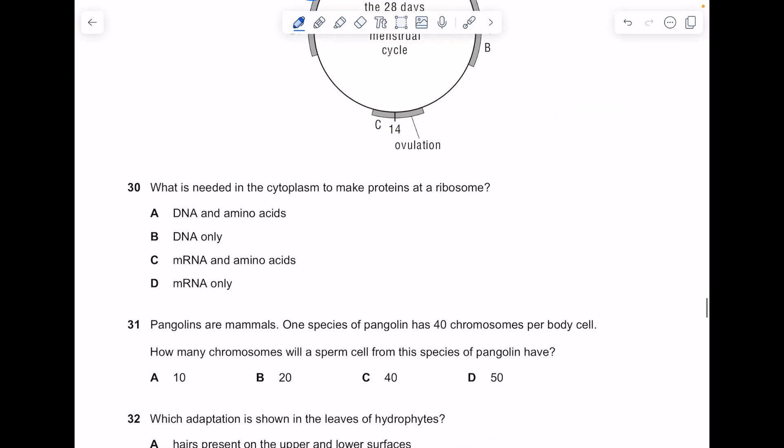What is needed in the cytoplasm to make proteins at a ribosome? Well, you need mRNA and amino acids. Remember the mRNA binds to the ribosome in the cytoplasm, and then the tRNA brings amino acids to the ribosome so they can be assembled.